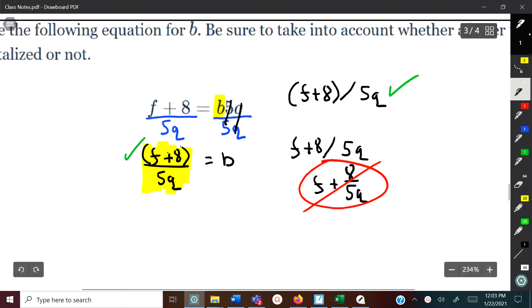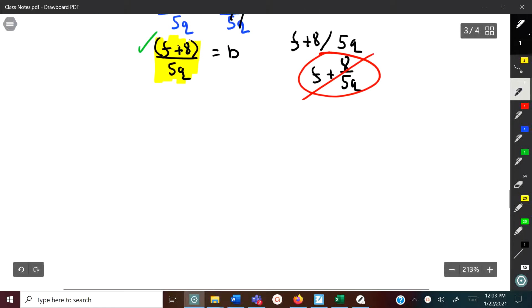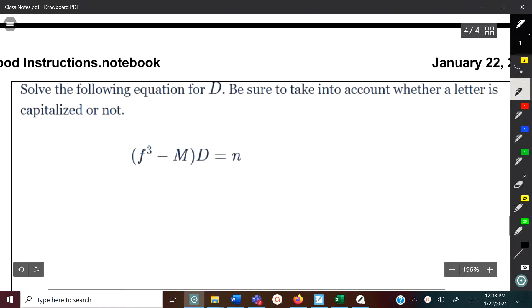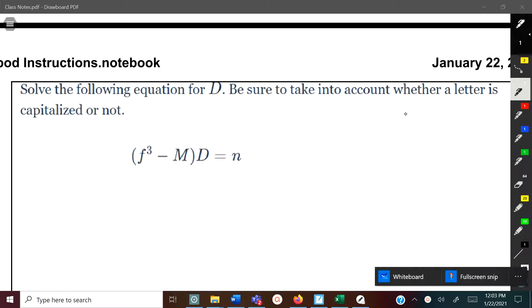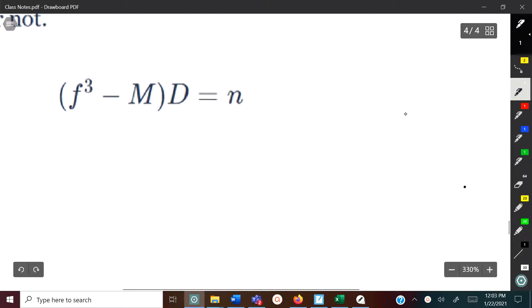Let's take a look at another example. Solve the following equation for d, making sure to take into account whether the letter is capitalized or not. We want to isolate this d by itself. You've got this more complicated expression, f cubed minus m, but the whole thing is being multiplied to d. So you do the opposite operation which is divide. Even though it's a binomial with two terms, it doesn't change—we're just going to divide by that whole term.